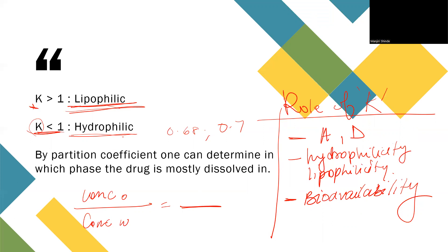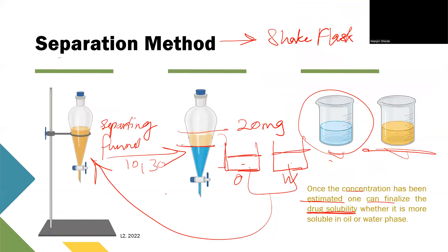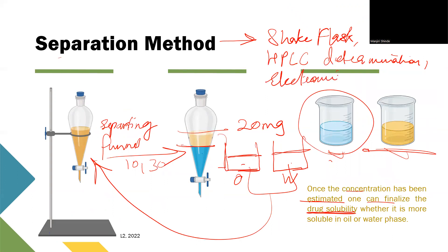Other methods for determination of partition coefficient — apart from this shake flask method — include HPLC determination, that is high performance liquid chromatography, and electrochemical methods. In this way, you can determine the partition coefficient and identify in which phase the drug is highly dissolved.